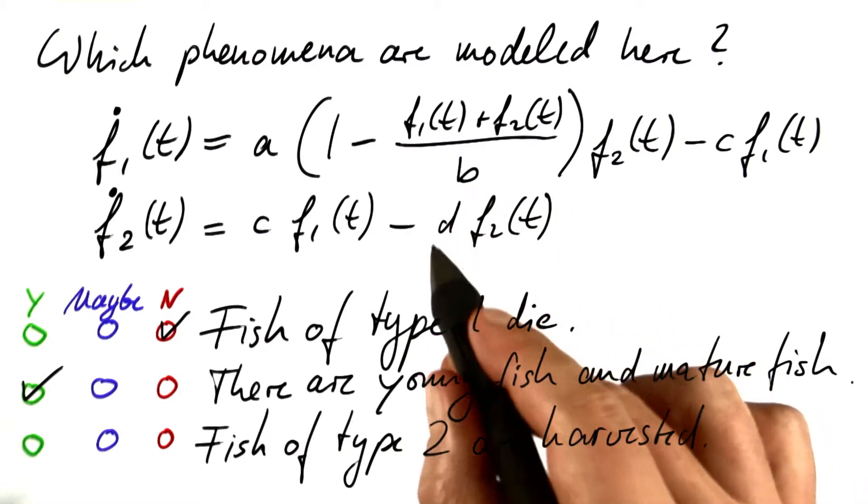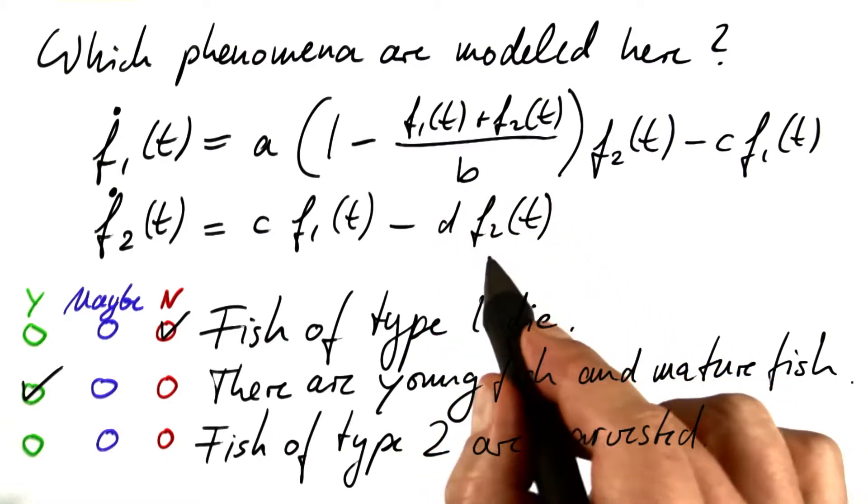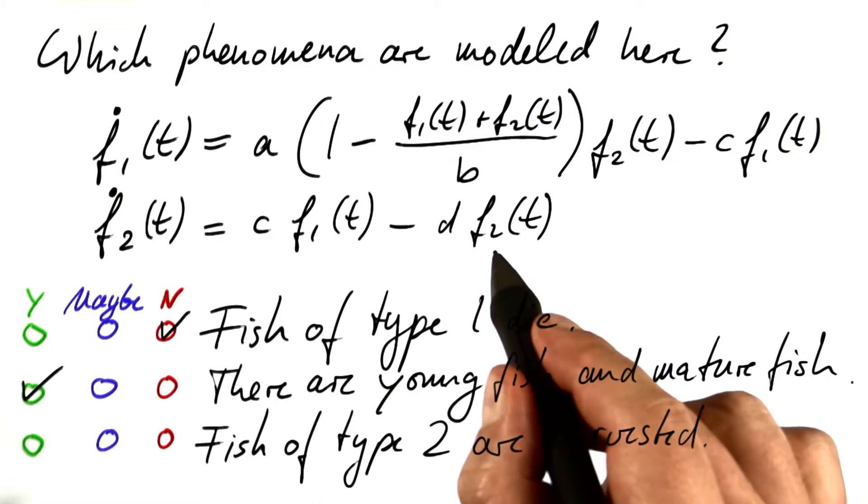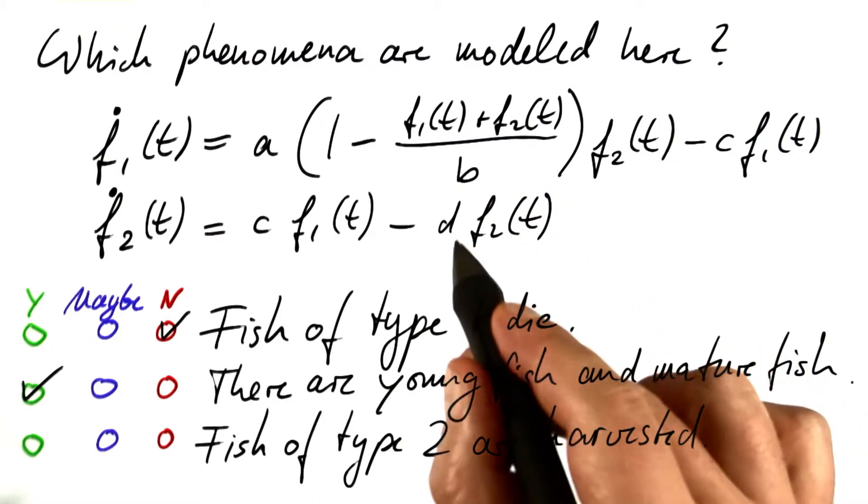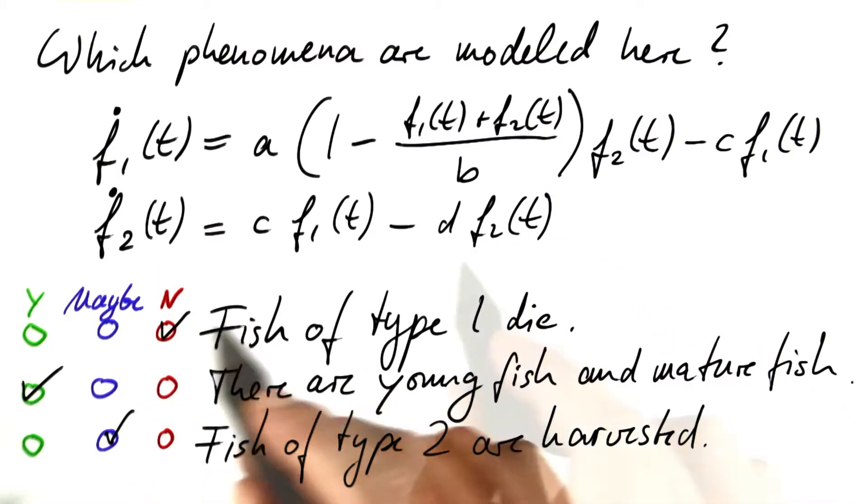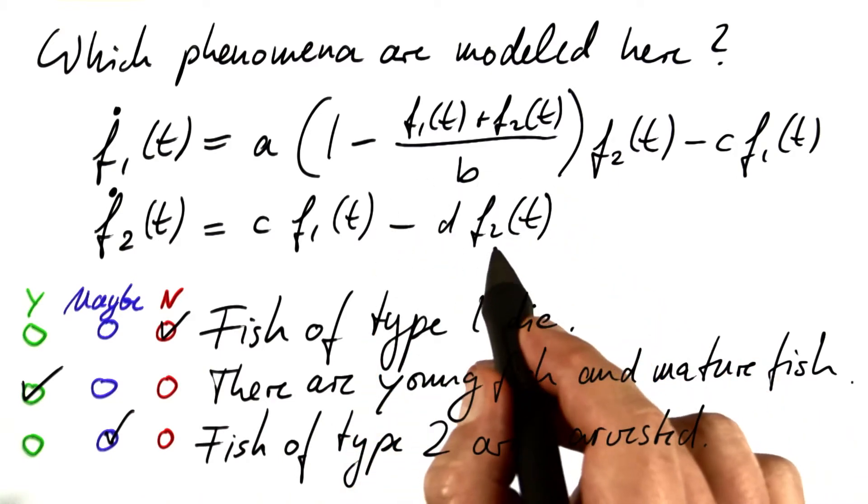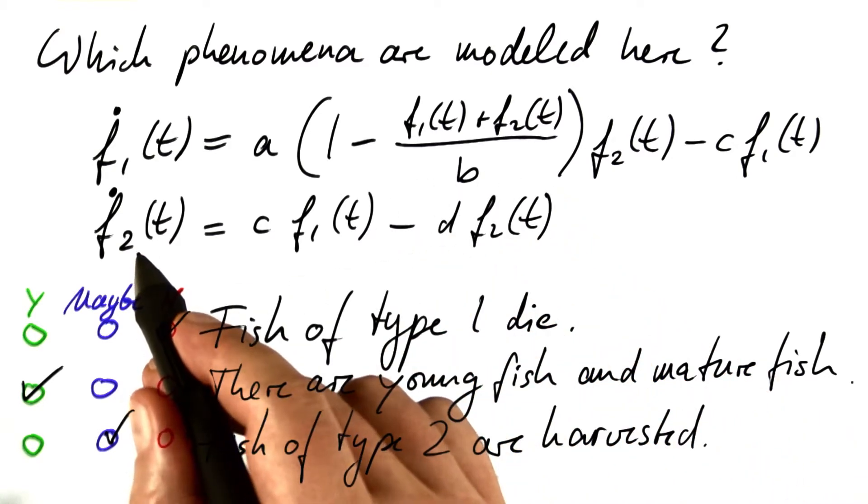This could be, however, harvesting that's proportional to the actual amount of fish. Maybe just every second fish is being harvested. So maybe, all in all, however, the second term looks like that fish of type 2 die of old age.